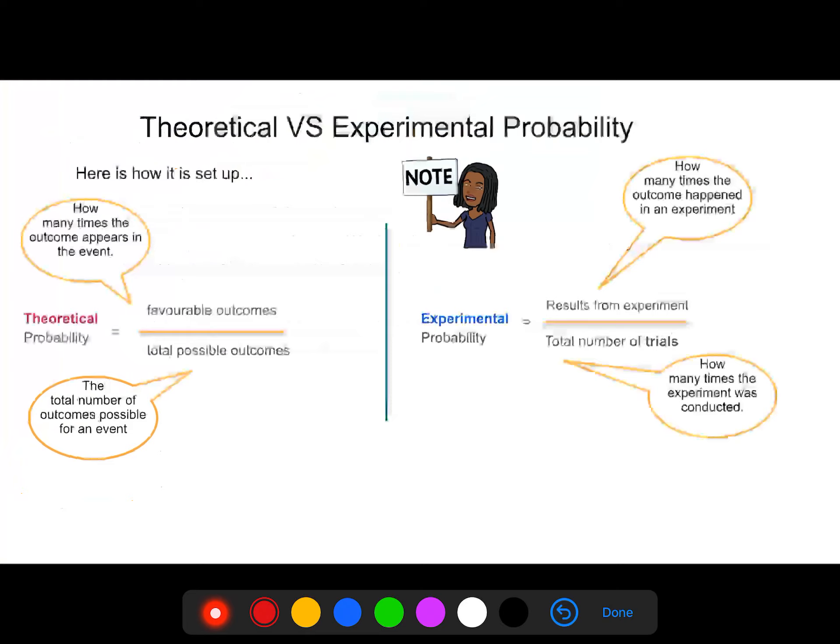Now, this is how it's set up. Theoretical probability, so what we are used to, it is favorable outcomes over total possible outcomes. That's what we've been working with so far. You do need to write this down.